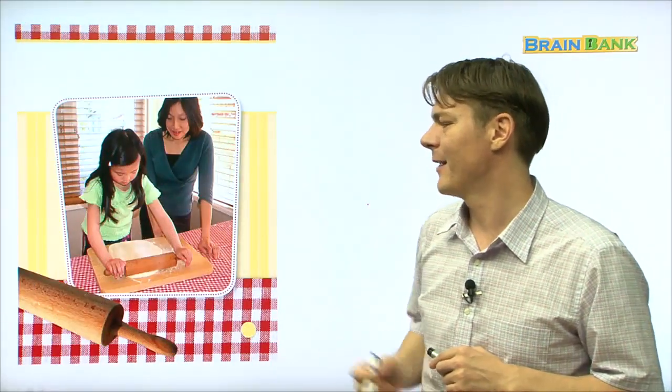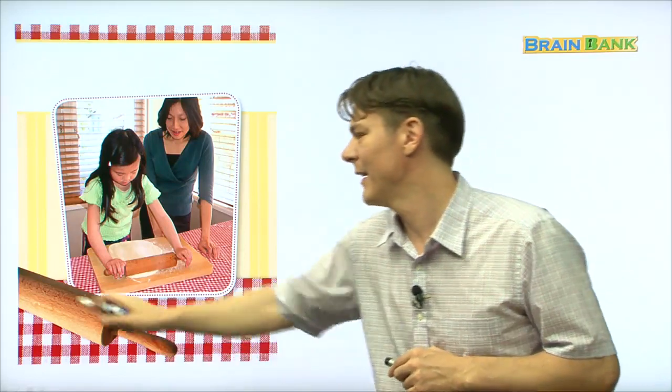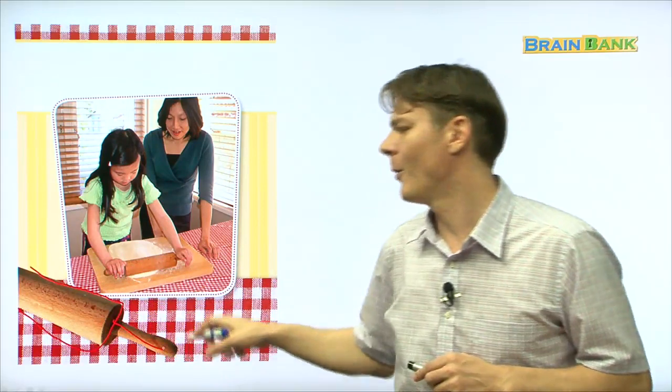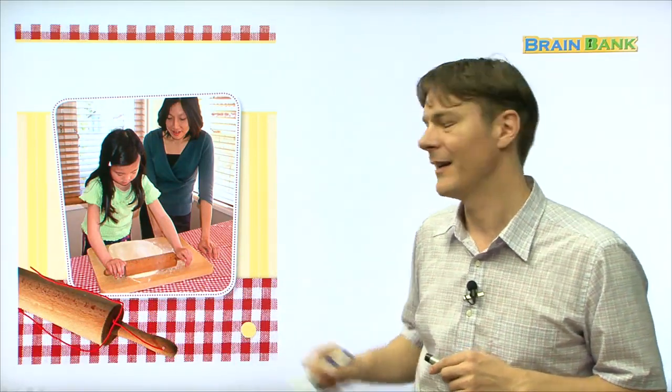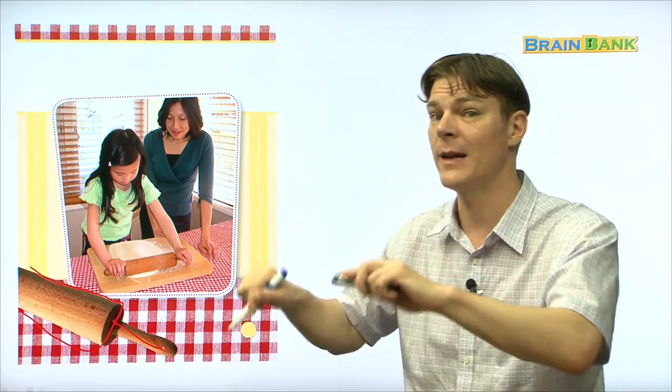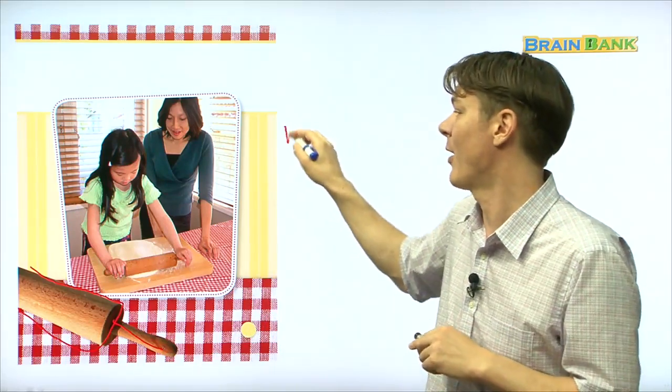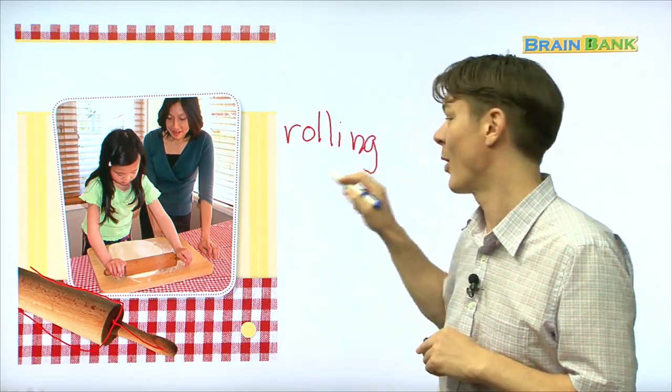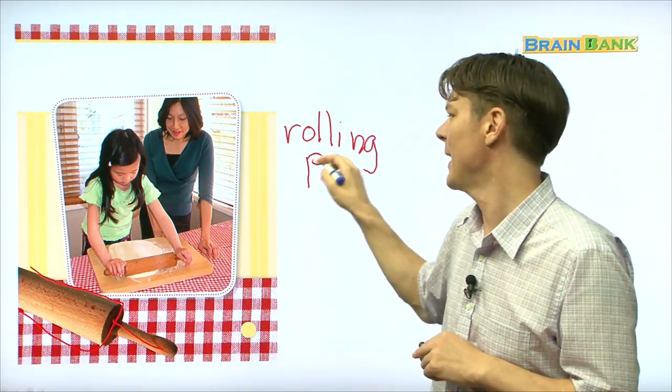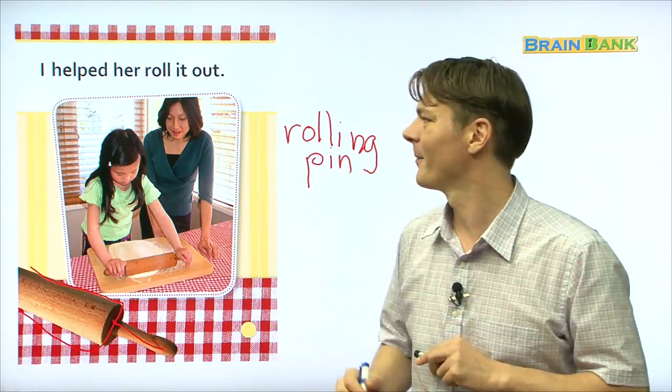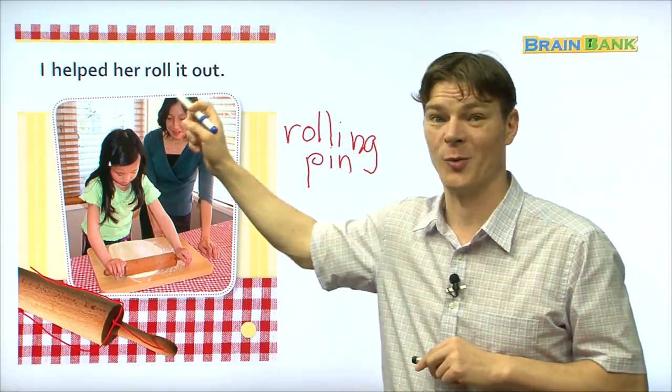Next, the little girl is using this big tool right here. Do you guys know what this tool is called? It's called a rolling pin. That's spelled R-O-L-L-I-N-G, rolling pin, P-I-N. Rolling pin. I helped her roll it out.